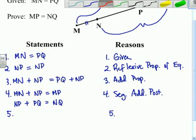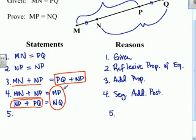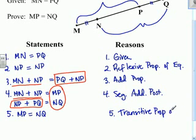So what we have now is we have MN plus NP appears there and there. We have PQ plus NP appears there and there. So if they're equal in statement number three, then they're still equal in statement number four. So these two values must be equal as well. And so we are going to say MP is equal to NQ. And that is our transitive property. And we are now done with this proof.